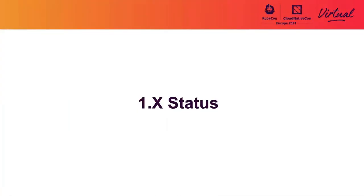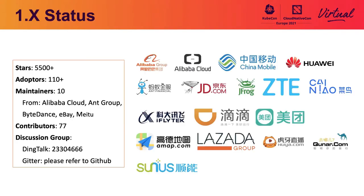First, let's take a look at the current situation of Dragonfly V1. At present, the number of stars of Dragonfly V1 has reached more than 5,500, and the number of adopters has also exceeded 110, involving various industries such as telecommunication, finance, cloud computing, and local life services. There are 10 maintainers from Alibaba Cloud, Ant Group, ByteDance, eBay, and MeiTuan, and currently 77 contributors.